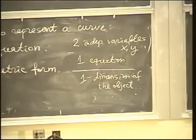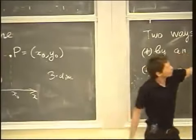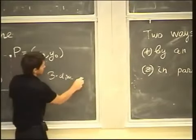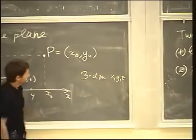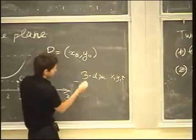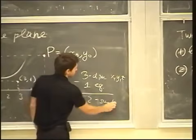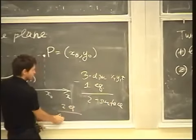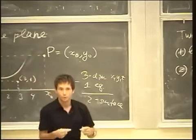This is the general rule: the dimension of your object is the difference between the number of independent variables — which in our course is going to be two or three — minus the number of equations you impose. More generally, if I start with three-dimensional space with coordinates x, y, z, and I impose one equation, I will get a two-dimensional surface. If I impose two equations, I get a one-dimensional curve. There's always this simple formula.